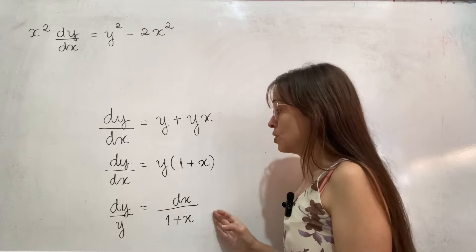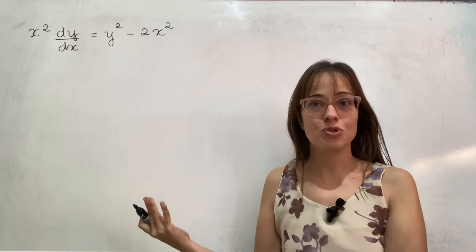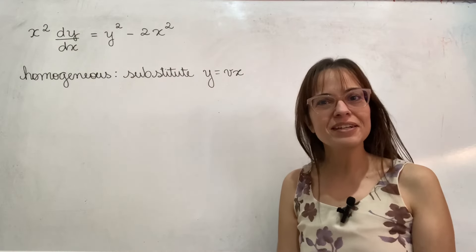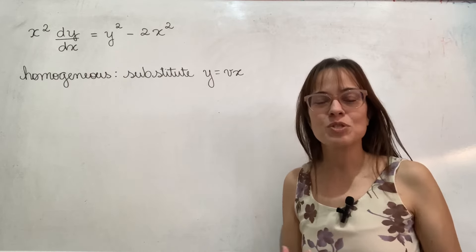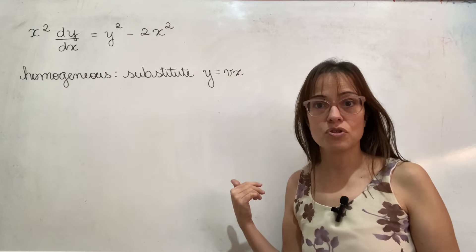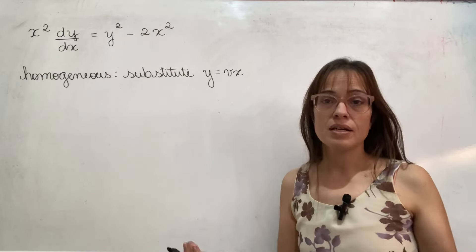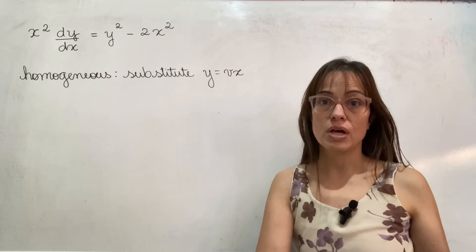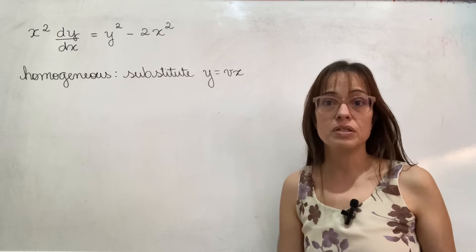This one is separable because it becomes separable after factoring. That other one is not separable. In the problem, they did say the technique to use was homogeneous equations, and they also said to use the substitution y = vx — which technically they didn't need to say, because that is the substitution you're supposed to use for a homogeneous differential equation. I haven't yet seen a problem where you're required to identify it as homogeneous yourself, but the sample size is very small.